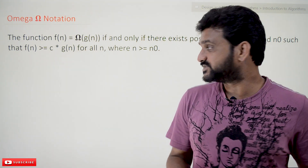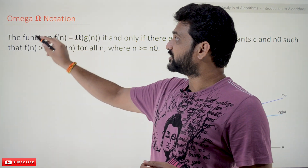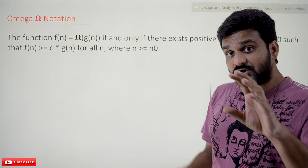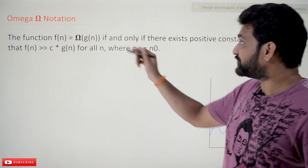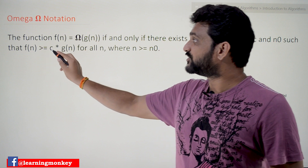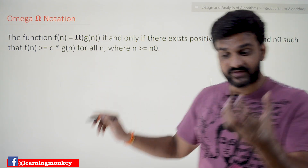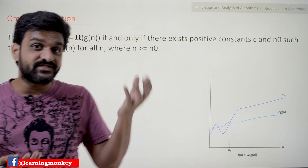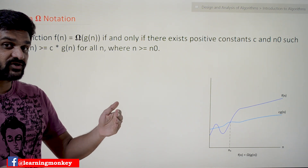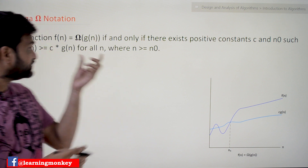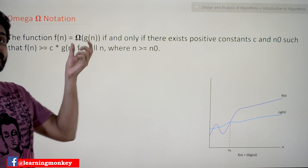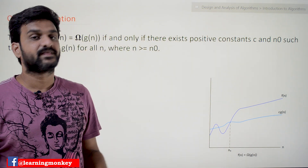The link for the playlist is provided in the description below. Now, what is Omega notation? A function f of n is Omega of g of n if and only if there exist positive constants c and n-naught such that f of n is greater than or equal to c times g of n for all values of n greater than or equal to n-naught. If this condition is true, then we can say that f of n is Omega of g of n.